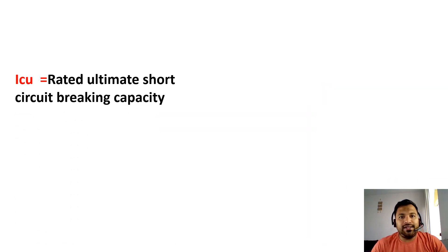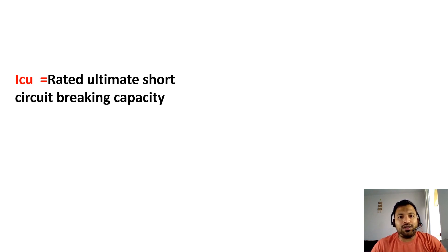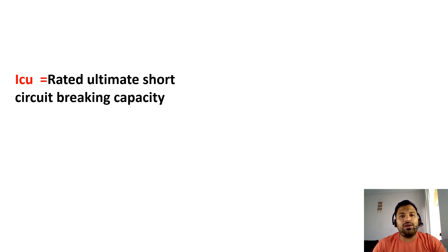Now we will see the ICU current. What is ICU current? ICU current is the ultimate short circuit breaking capacity. From the name itself, it is understood that the breaker will operate at the ultimate short circuit current. During a short circuit, enormous current will flow, and we are providing a circuit breaker to interrupt this short circuit current. So we have to know that, for example, this circuit breaker can carry 100 kiloamperes of short circuit current, and accordingly we choose our circuit breakers.